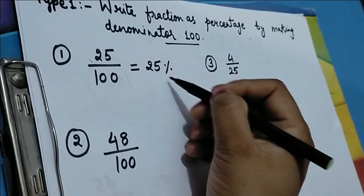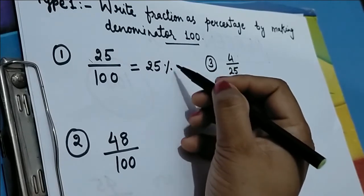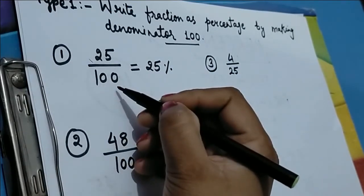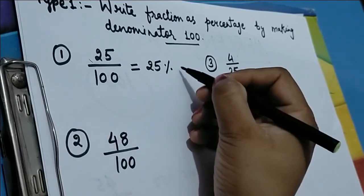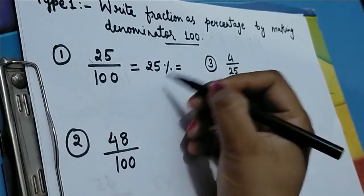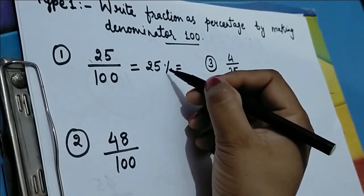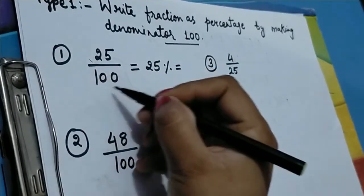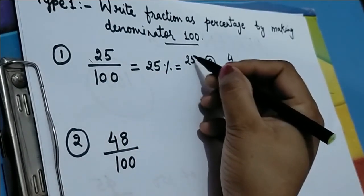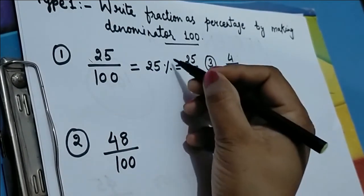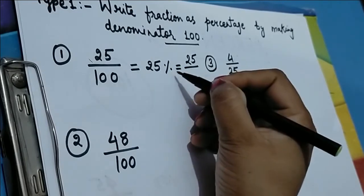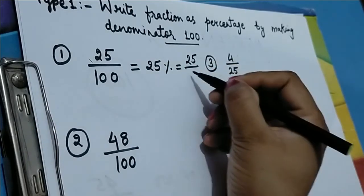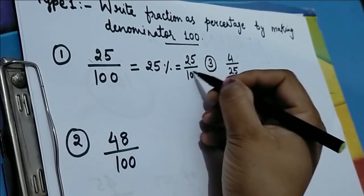When the percentage sign appears, the 'divided by 100' disappears. Conversely, when the percentage sign disappears, the 'divided by 100' appears. In other words, when the percentage sign is removed, we write the number with denominator 100.